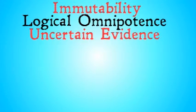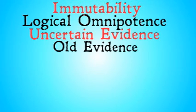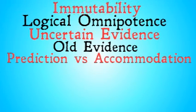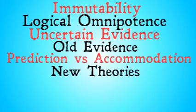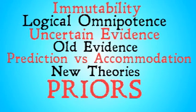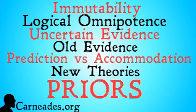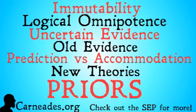That was the problem of uncertain evidence. Next up is the problem of old evidence, then the problem of prediction versus accommodation, the problem of new theories, and finally the problem of the priors. Watch this video and more at Carneades.org. Check out the SEP for more information on Jeffrey conditionalization and all of these objections. Stay skeptical, everybody.